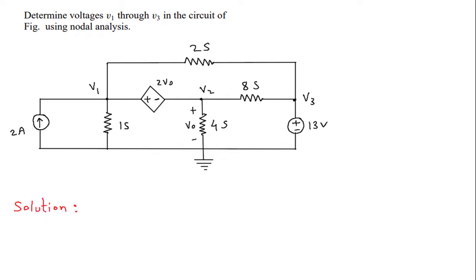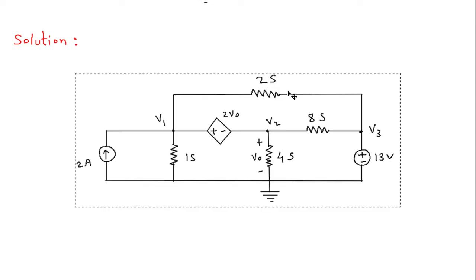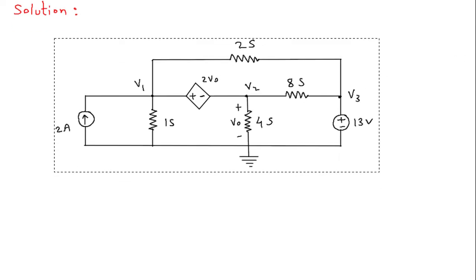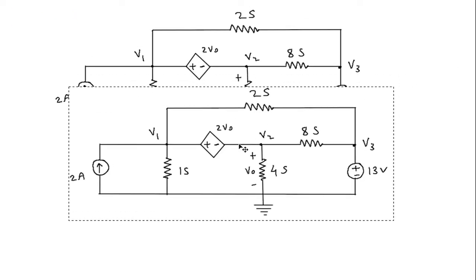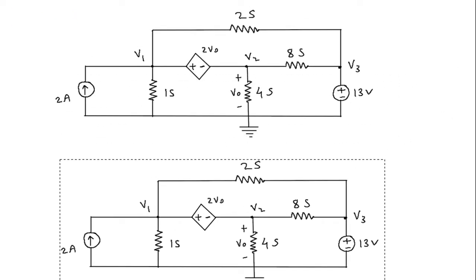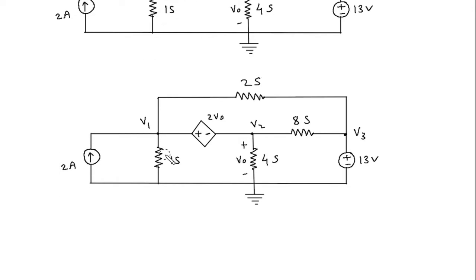Solution: first we will redraw the circuit, then we will convert the Siemens into its equivalent Ohms. So this 1 Siemens will be 1 by 1 Ohm, that is same as 1 Ohm.